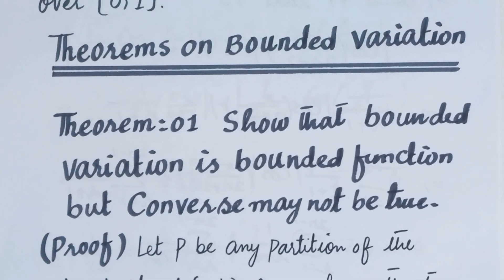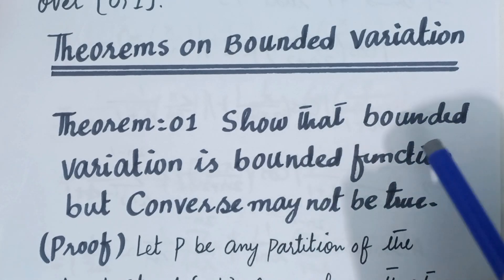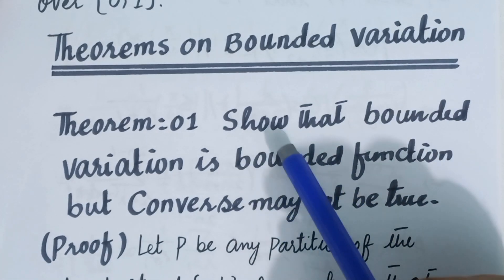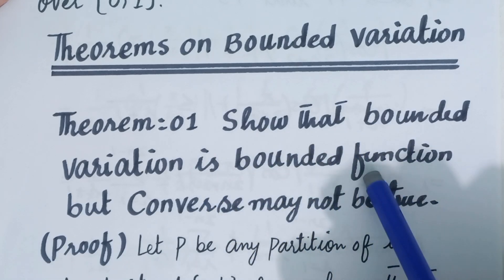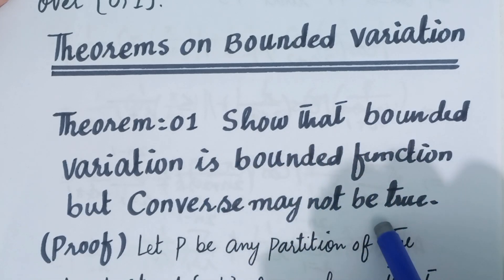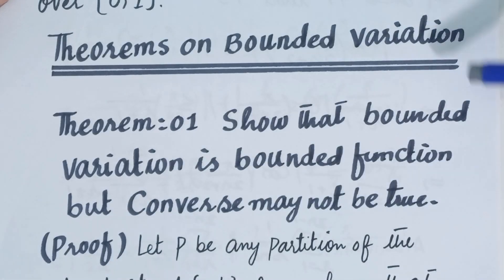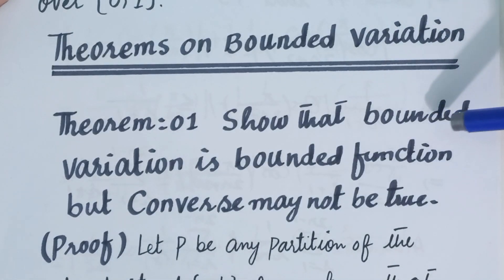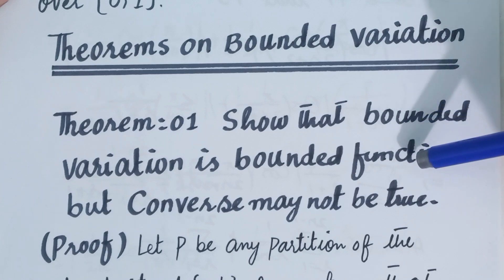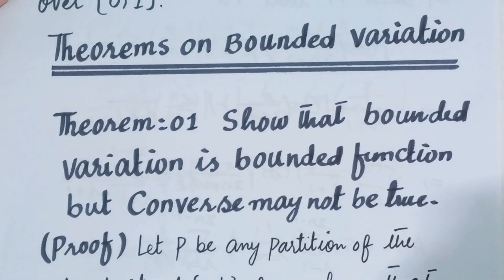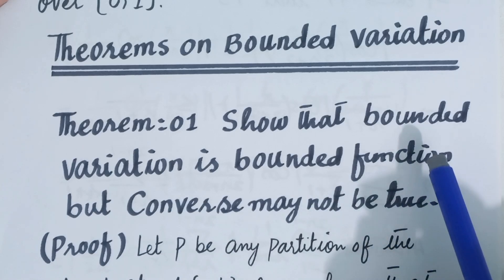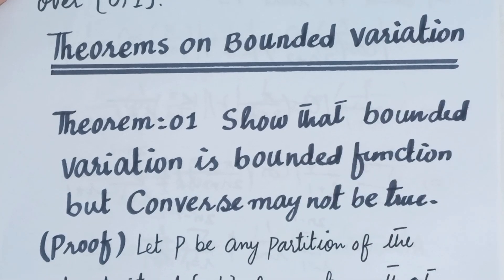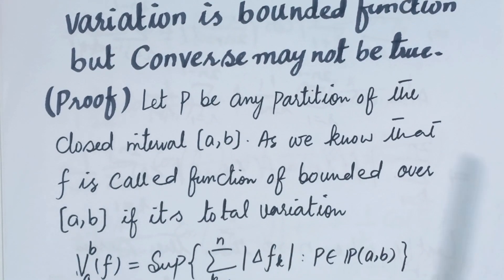The first theorem about bounded variation states: show that a function of bounded variation is a bounded function, but the converse may not be true. We need to show that a function of bounded variation is always a bounded function, but the converse may not be true — meaning if a function is bounded, it is not necessary that it is also a function of bounded variation.